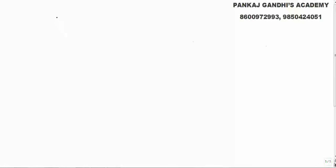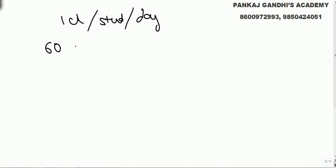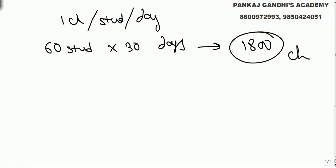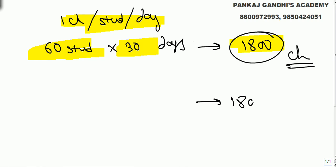Let's say in our class we give one chocolate per student per day. There are 60 students and the class lasts for 30 days. So for 60 students, 60 chocolates per day into 30 days, we will need 1800 chocolates. If we decide to give one chocolate per student per day for 60 students for 30 days, we will need this many chocolates.